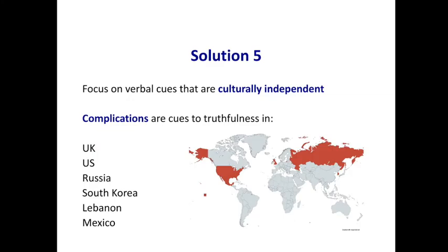And that's what we've done. Complications are cues to truthfulness in the UK, the US, Russia, South Korea, Lebanon, and Mexico — those are the countries we've examined so far. The information we now have about Russia, from studies conducted over about five or six years, can be very informative for the near future.